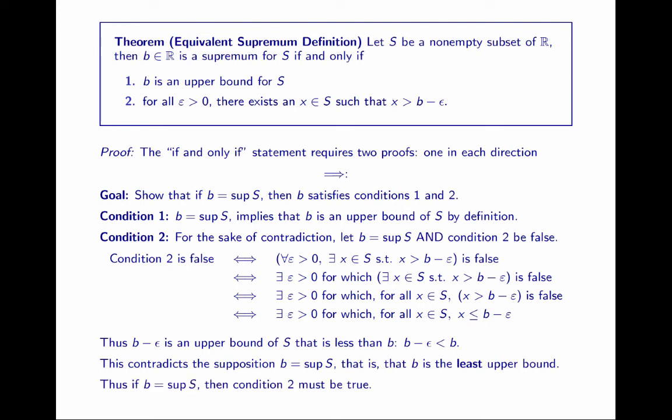Thus, if B is the supremum of S, then condition two must be true. In other words, it's not possible for B to be the least upper bound and for condition two to be false. So we've proven that if B is the supremum of S, then conditions one and two must be true.